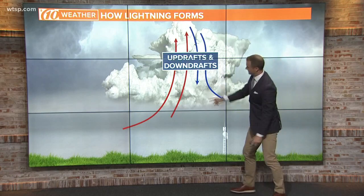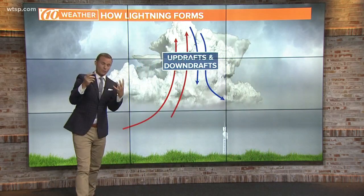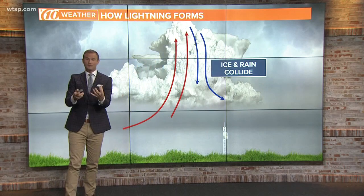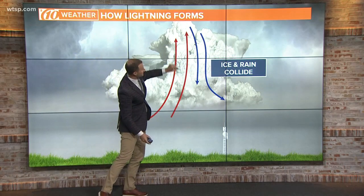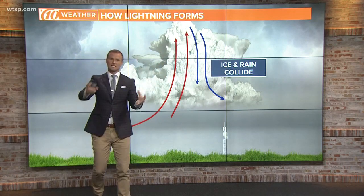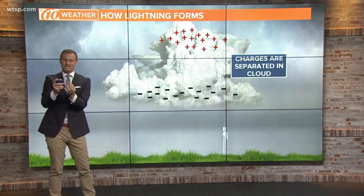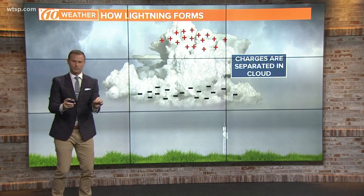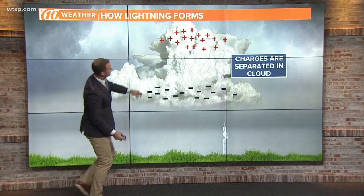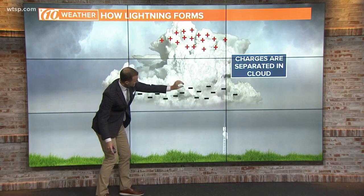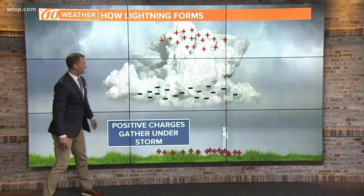In those thunderstorms, you have updrafts, you have downdrafts, winds going up and down. Those updrafts and downdrafts cause the ice pellets and ice crystals on the top of the clouds to collide with the rain. All of that collision — it's just like when you're walking on a carpet and you get that static electricity — it's separating the charges. Positive charges go to the top of the storm, negative charges go to the bottom of the thunderstorm.